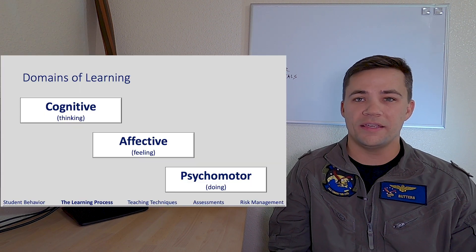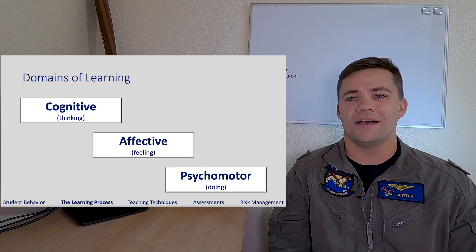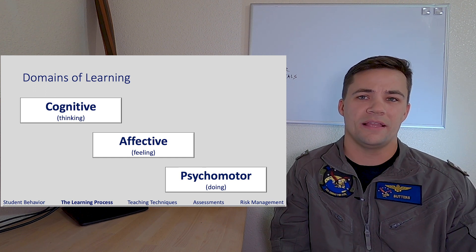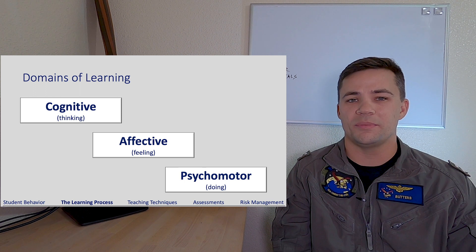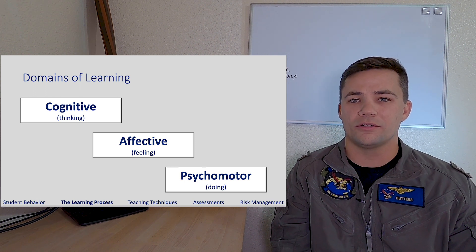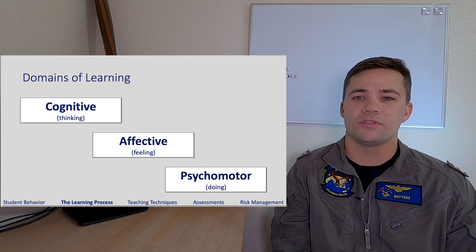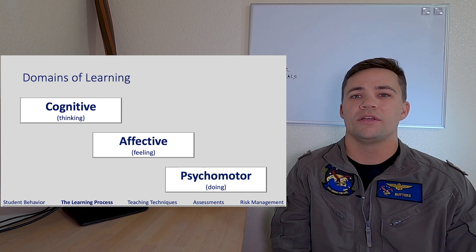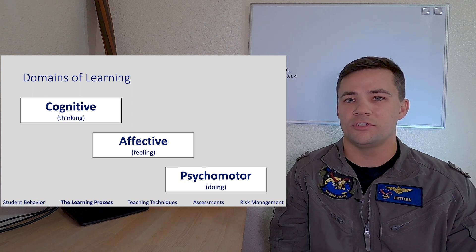Cognitive is your thinking. And that's not just knowledge. Knowledge is the base level of cognitive. It's back to what we were talking about at the beginning - those thinking skills, higher order thinking skills, problem solving, judgment, that type of learning in the cognitive domain.